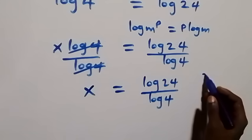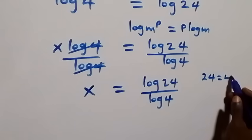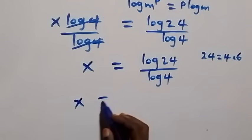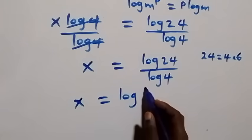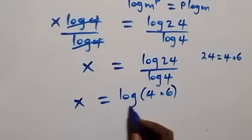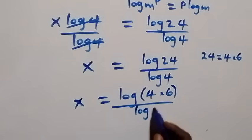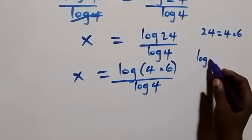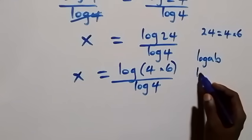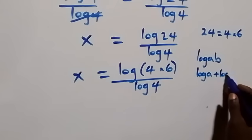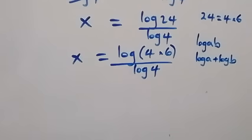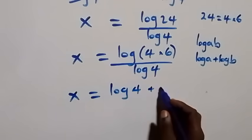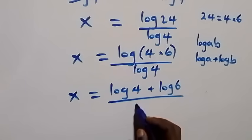Now 24 can be written as 4 times 6, so we have x equals log(4 times 6) over log 4. Then we apply the product law of logarithms: log(a times b) can be written as log a plus log b.